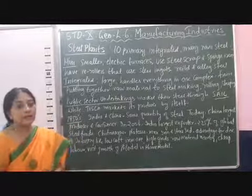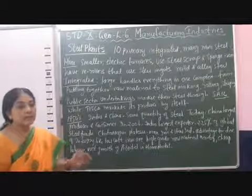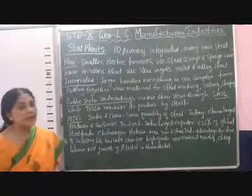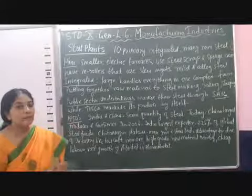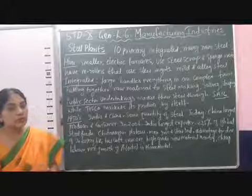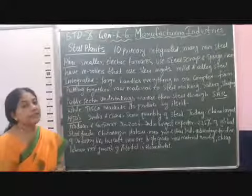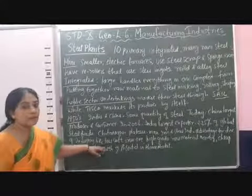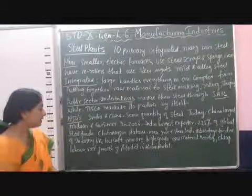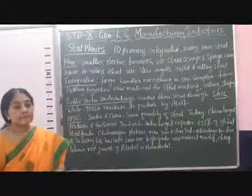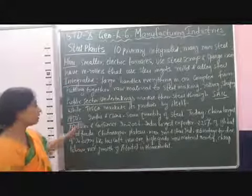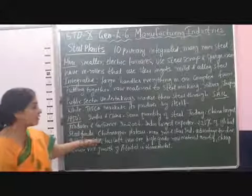In India, the Chotanagpur plateau is the area where raw materials are easily available, so most of the plants are located in the Chotanagpur area and maximum iron and steel industries are located there. This is because of certain advantages: close proximity of raw materials available at low cost, high grade of raw materials, nearby cheap labor, and vast growth potential in home markets — meaning nearby there are many industries to which steel can be easily sold.